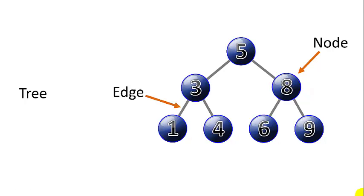A tree is a collection of nodes with edges that connect them. The nodes are organized into levels, and the top level is called the root node.